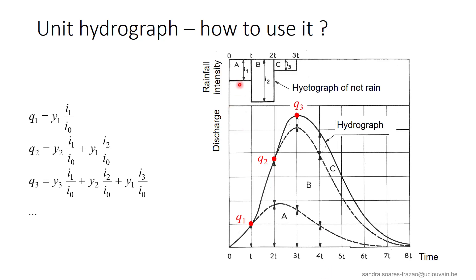Let us consider the rainfall illustrated here, composed of three uniform rains A, B, and C of intensities I1, I2, and I3. The hydrograph resulting from each single rainfall is directly proportional to the unit hydrograph. This means that the ordinates y of the unit hydrograph are multiplied by the ratio of the considered rainfall intensity and the intensity I0 of the unit rainfall. Adding the contributions of each single rainfall A, B, and C, and taking into account the delay between the rainfalls, yields the discharges of the resulting hydrograph at each time step t, which can be taken equal to t0, the time of the unit rainfall.